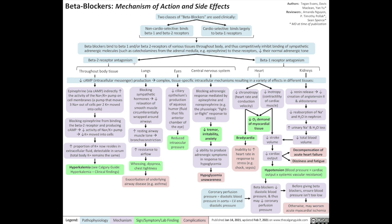Beta 2 receptor antagonism usually affects the lungs, the eyes, the central nervous system, and other body tissues. Beta 1 receptor antagonism usually affects the heart and the kidneys. The effect of beta 1 or beta 2 receptor antagonism throughout these tissues is reduced cyclic AMP production — cyclic AMP being an intracellular messenger — which leads to complex tissue-specific intracellular mechanisms resulting in a variety of different effects in different tissues.